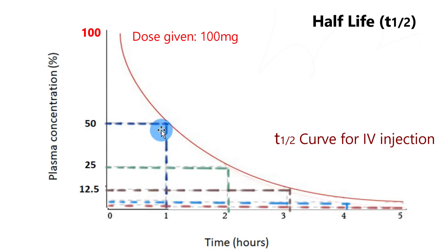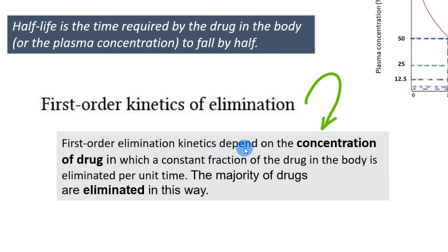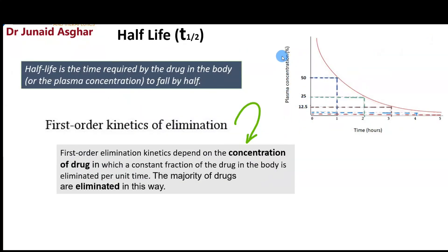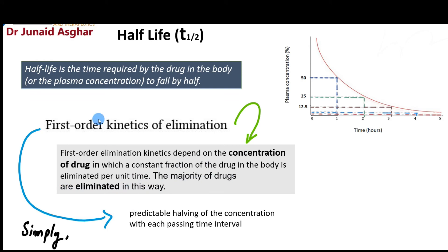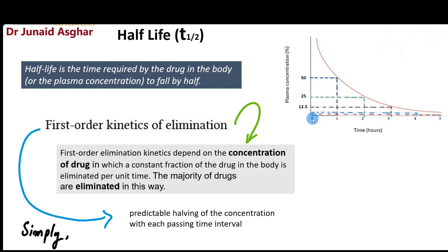During the first half-life period, the body eliminated 50% of the drug. This brings us to first-order elimination kinetics, which states that a constant fraction of the drug in the body is eliminated per unit time. The majority of drugs are eliminated this way. Simply put, first-order kinetics means predictable halving of the concentration with each passing time interval.